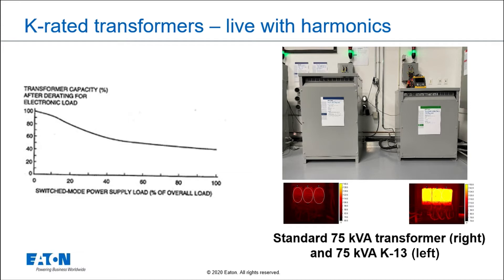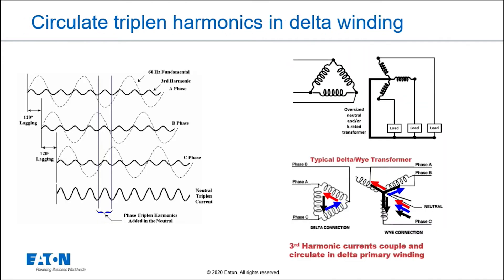A K-rated transformer, if you look at the physical size of it, kind of looks like a 112.5 KVA transformer with a 75 KVA label on it. We actually oversize them and build them a little beefier to handle the harmonic currents and the heating associated with that. It also has additional benefits — if it's a delta-Y transformer, we can circulate the third harmonic currents in the delta, just like any delta-Y transformer, whether K-rated or standard, and those third harmonics will be eliminated from the primary system. Harmonic currents come from the load, so the third harmonics accumulate on the neutral, come back, and circulate in the delta winding on the primary, so we don't have those third harmonics on the 480-volt side.